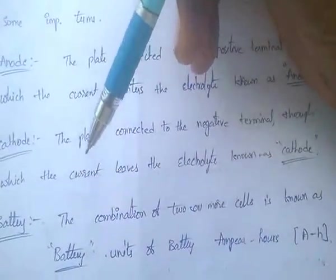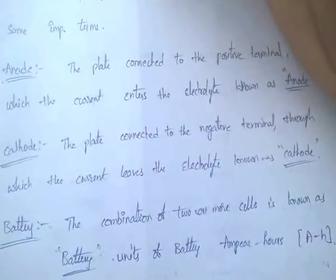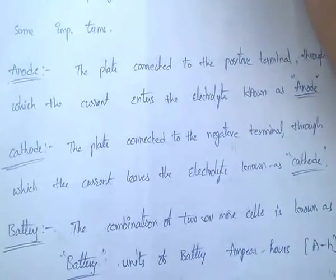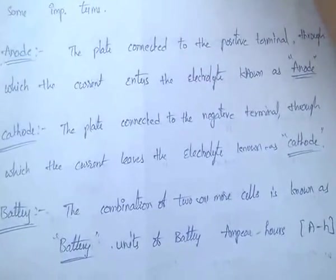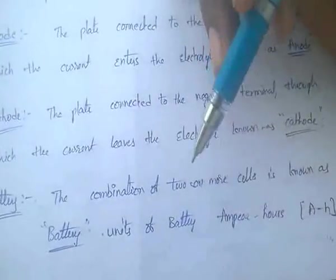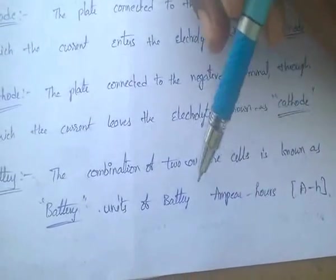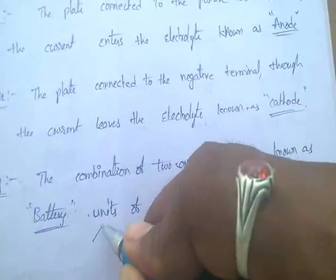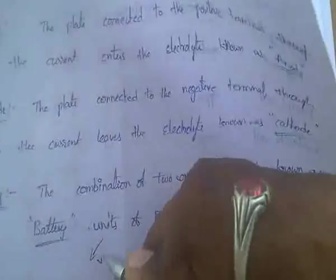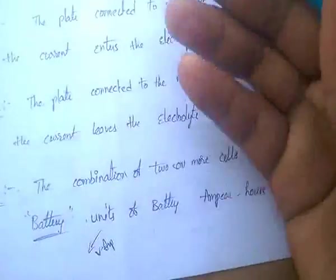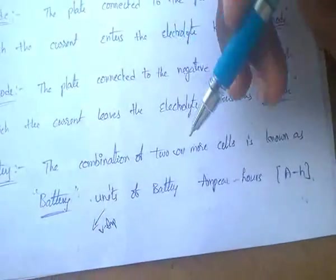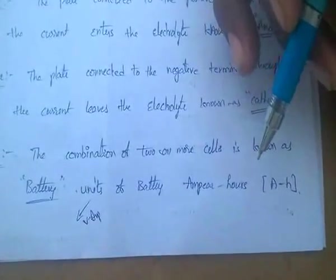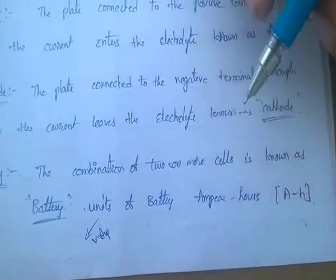What is a battery? A battery is nothing but a combination of cells. A combination of cells is known as a battery. The units of battery are ampere hours — this is very, very important. Units of battery: ampere hours.